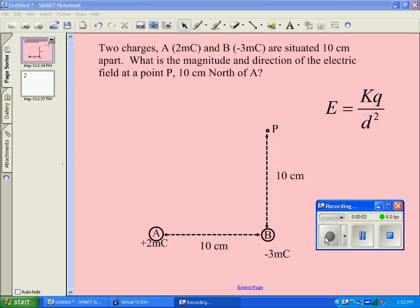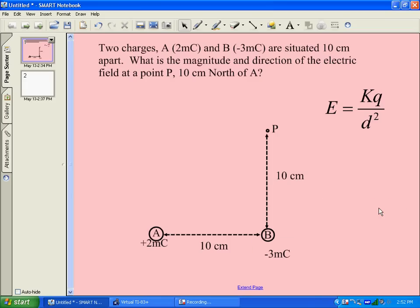Hi there. I'm going to start a question for students working on determining electric field strengths and directions. I've set up a question where we have two charges, A and B, that are positive 2 millicoulombs and negative 3 millicoulombs respectively, and I've got them 10 centimeters apart.